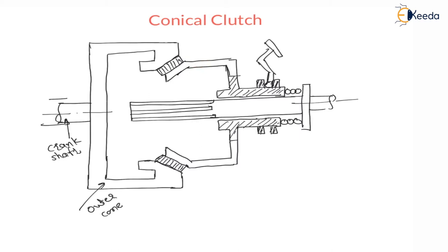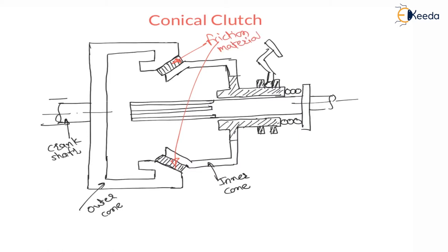And here it is an inner cone. Now between inner cone and outer cone, there is a friction material or friction lining which is inclined with the horizontal as well as vertical axis. These are the friction linings.